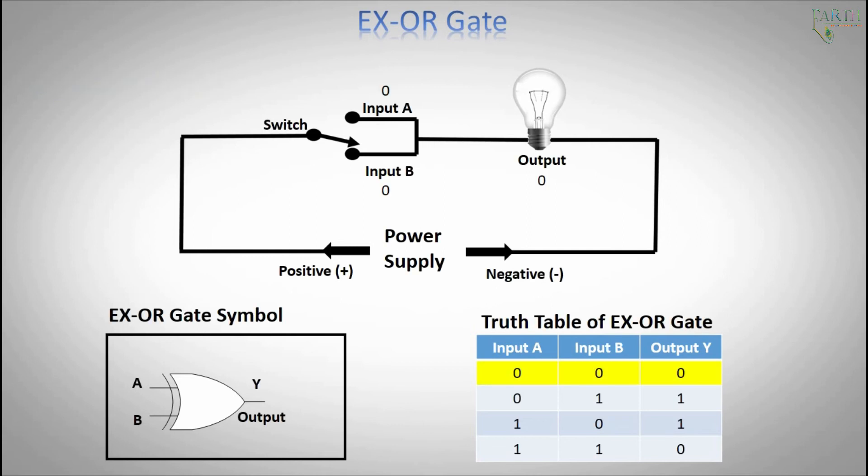Input A0, input B0, output is 0 low. Input A0, input B1, output is 1 high. Input A1, input B0, output is 1 high.